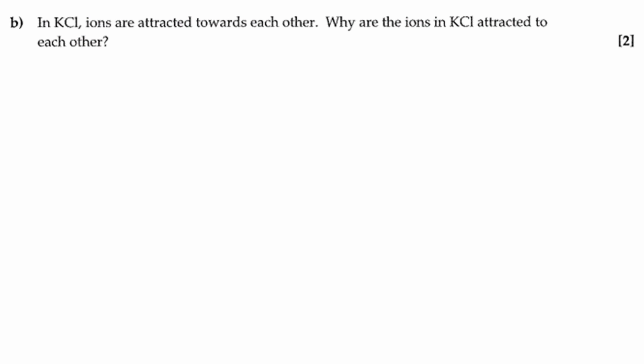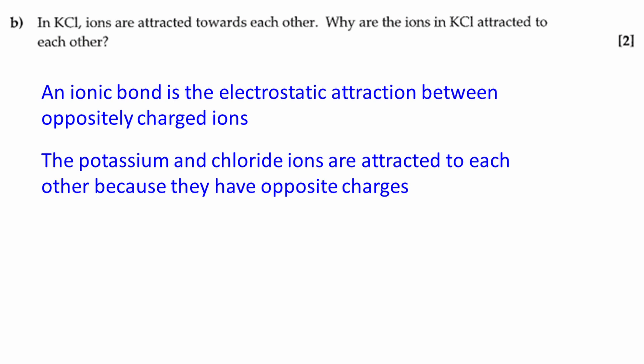Here's the next part of the question. Why are the ions in KCl attracted to each other? An ionic bond is the electrostatic attraction between oppositely charged ions. The potassium and chloride ions are attracted to each other because they have opposite charges.